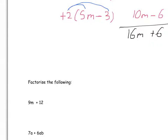Do they both appear in a 3 times table? Well, yes, they do. So we can take 3 out. What do we multiply 3 by to get to 9m? Well, to get from 3 to 9 we times by 3, so it's 3m. And what do we multiply 3 by to get to 12? Well, that's 4, so it's plus 4. So the factorised version of 9m plus 12 is 3 in brackets 3m plus 4.